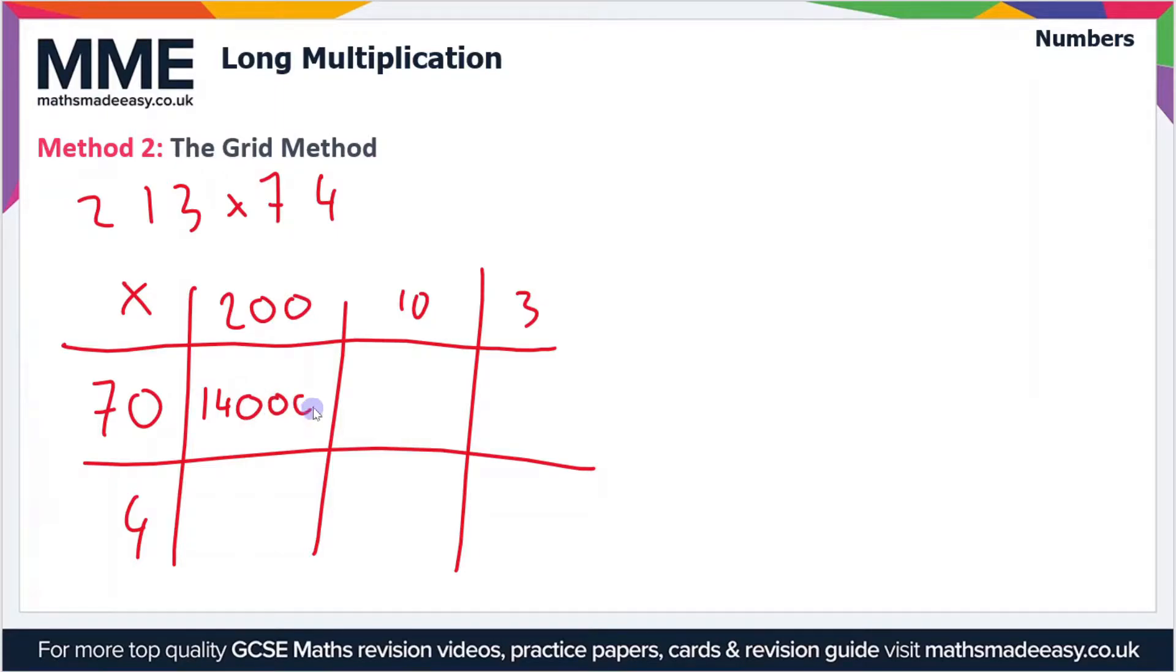4 times 200 is 800. 10 times 70 is 700. 10 times 4 is 40. 3 times 70 is 210, and 3 times 4 is 12. So now all we have to do is sum up each of the values inside the grid.